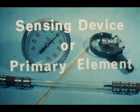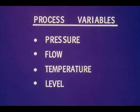To measure anything, you must have some sort of measuring device. In instrumentation, the measuring device is called a sensing device, or a primary element. With the proper sensing devices, we can measure the four process variables: pressure, flow, temperature, and level.